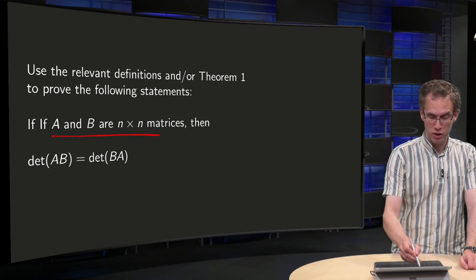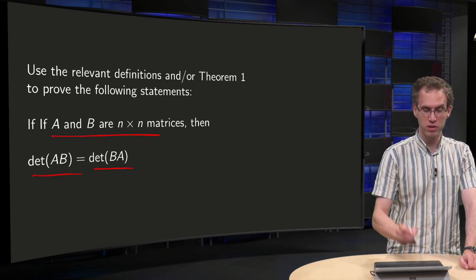So what's the statement in this video? Try to prove that if A and B are n×n square matrices, then det(AB) equals det(BA).